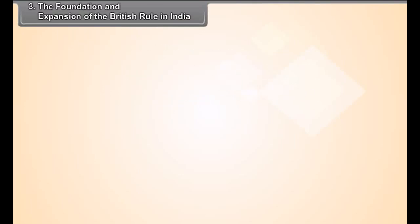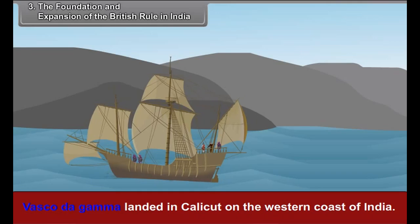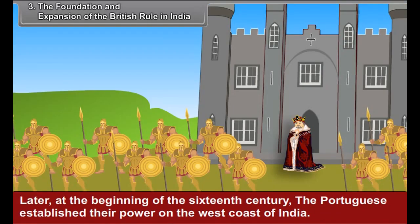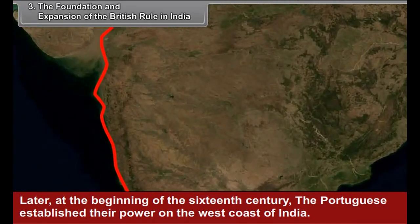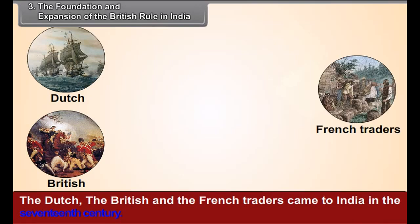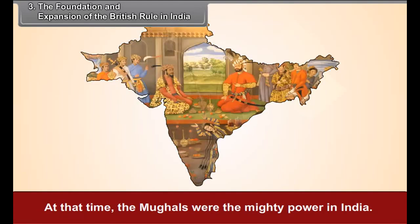Chapter 3: The Foundation and Expansion of the British Rule in India. Vasco da Gama landed in Calicut on the western coast of India. Later, at the beginning of the 16th century, the Portuguese established their power on the west coast of India. The Dutch, the British and the French traders came to India in the 17th century. At that time, the Mughals were the mighty power in India. We shall study the foundation and expansion of the British rule in India against this background.